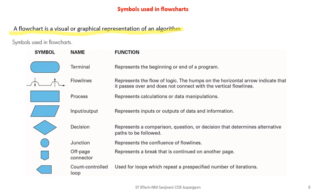These are the basic symbols of a flowchart which you may have already learned — a good time to revise them. The termination symbol, flow lines, the process (internal process) symbol, the input/output symbol used to take input from a user or print a value, the decision symbol for taking decisions based on conditions, and symbols for loop counting and control.